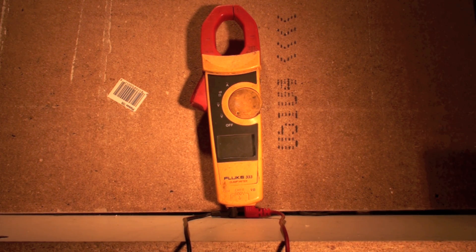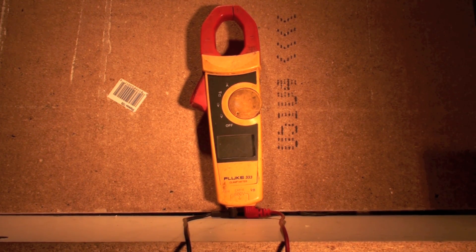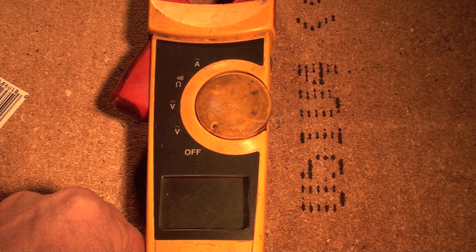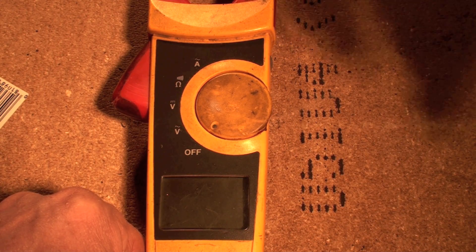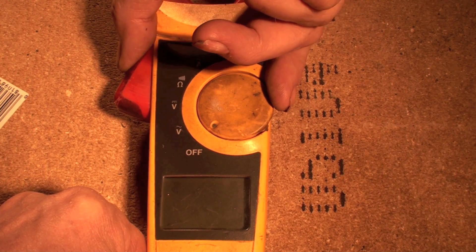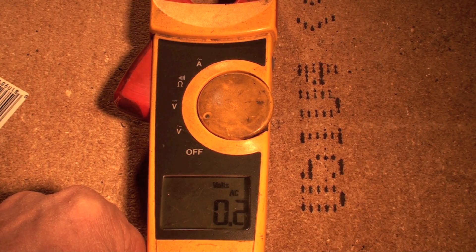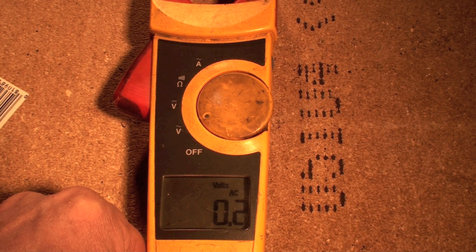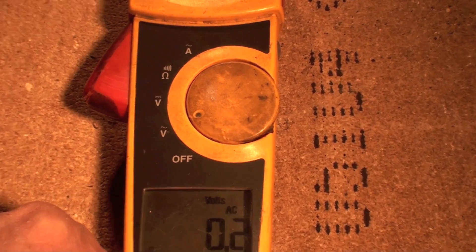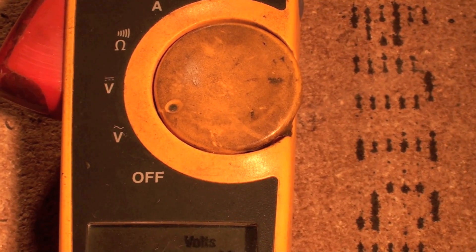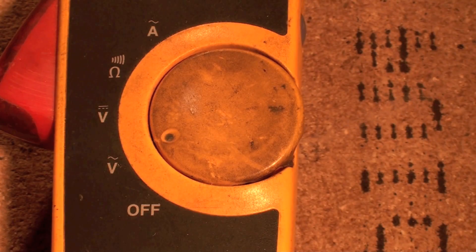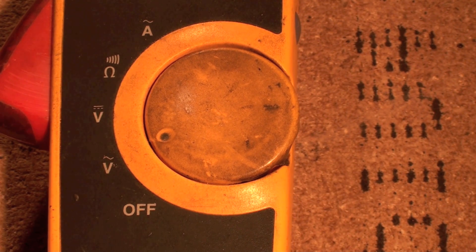Let's take a close-up of this thing so we can see each position. You can see the dial now, it's in the off position. When we turn it to volts, you can see the voltage position there with a little squiggly on it - that means AC volts.